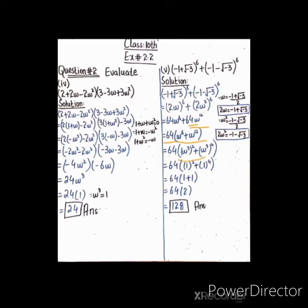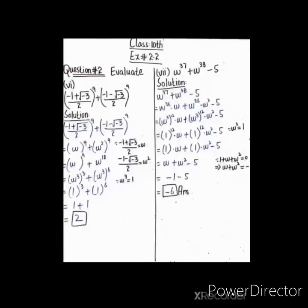میں نے ω^6 کو (ω³)² اس لیے لکھا تاکہ ω³ = 1 use کر سکوں۔ اسی طرح ω^12 = (ω³)^4 لکھا۔ جہاں جہاں ω³ ہے وہاں 1 put کریں: 1² = 1 اور 1^4 = 1۔ تو (1 + 1) = 2، اور 64 × 2 = 128۔